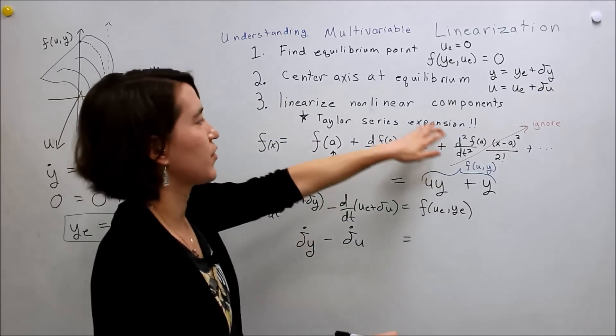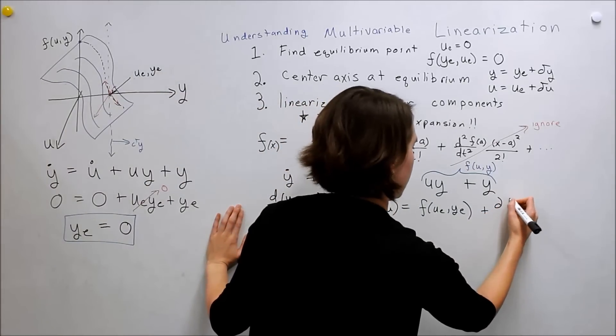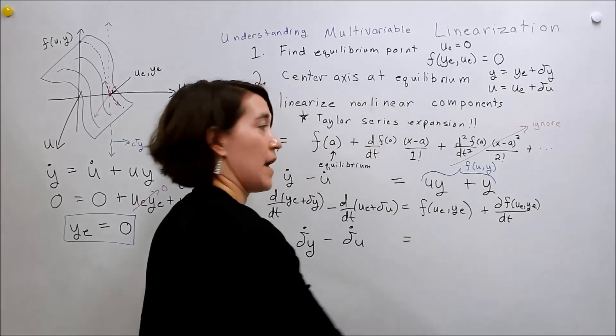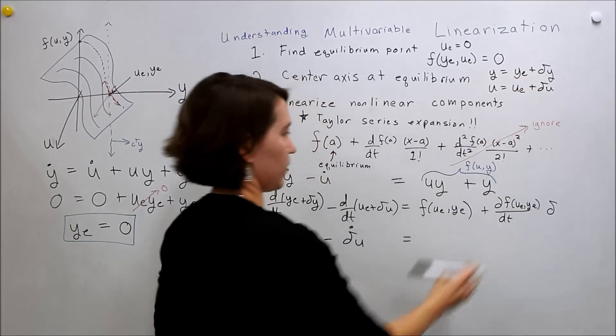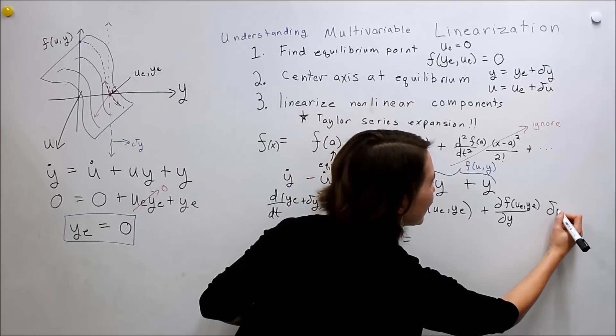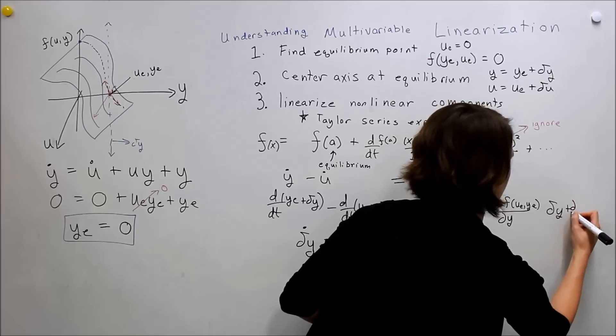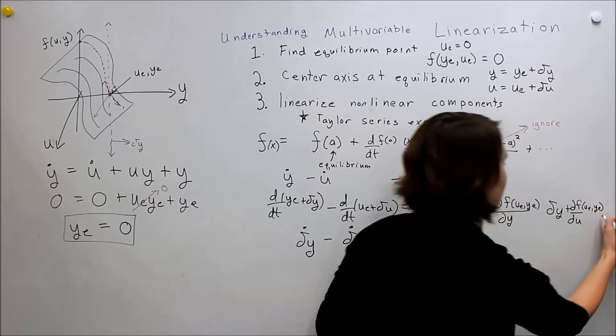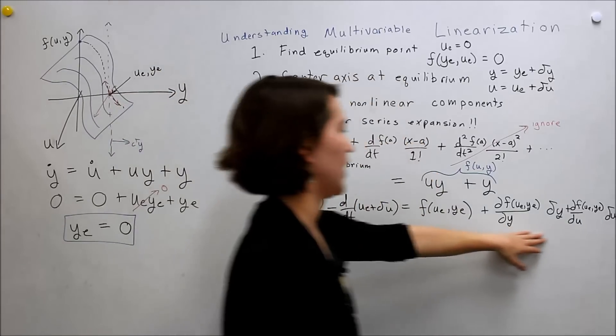And then we will do this term, but because we have two variables, we have to do a partial. So we take the partial of f, and we'll evaluate it at u_e and y_e over dy. And then we multiply it by, it would be y minus y_e. Oh gosh, partial. Do this again. So partial, we're going to do y, and then this will be delta y here. Okay, so that's one dimension, and then we have to also do the other dimension. So partial, this time partial in terms of u, f of u_e, y_e, and then delta u. These would both be divided by 1 factorial, which is 1, so we are left with just this expression.